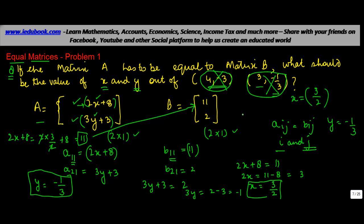Similarly, if y is equal to minus 1 by 3, then this value will be equal to 3y plus 3, which will be equal to 3 into minus 1 upon 3 plus 3. Minus 1 plus 3 will be 2, which is again the value out here.